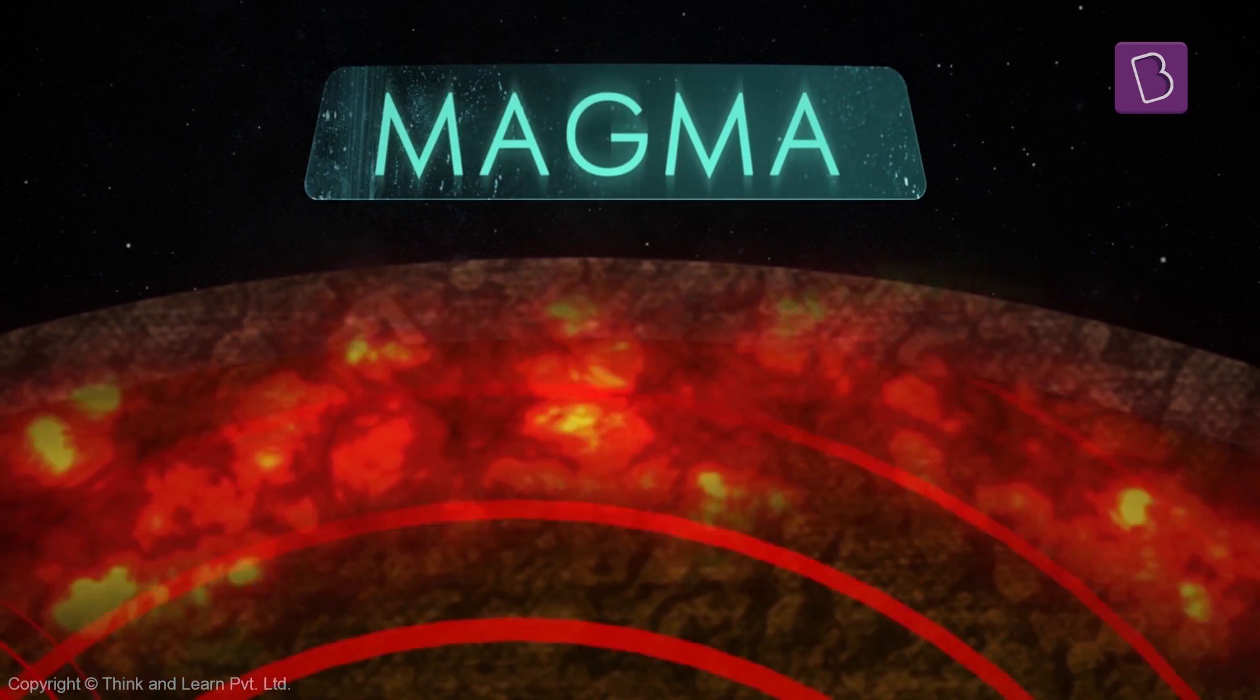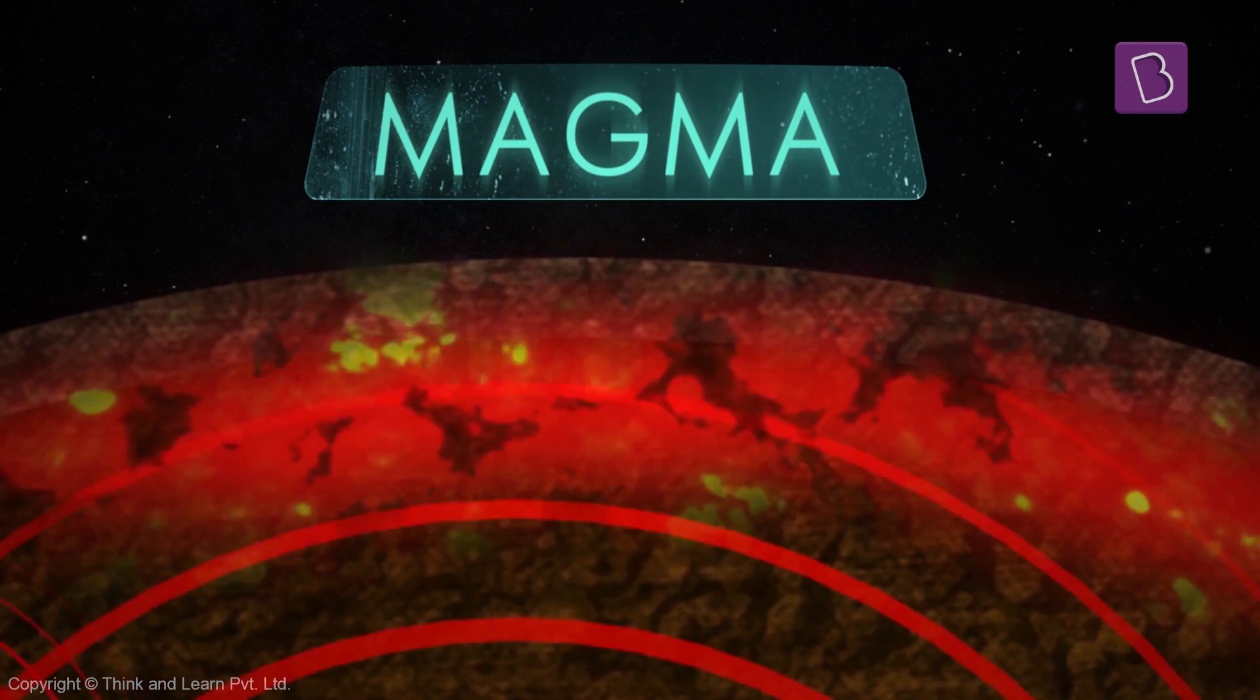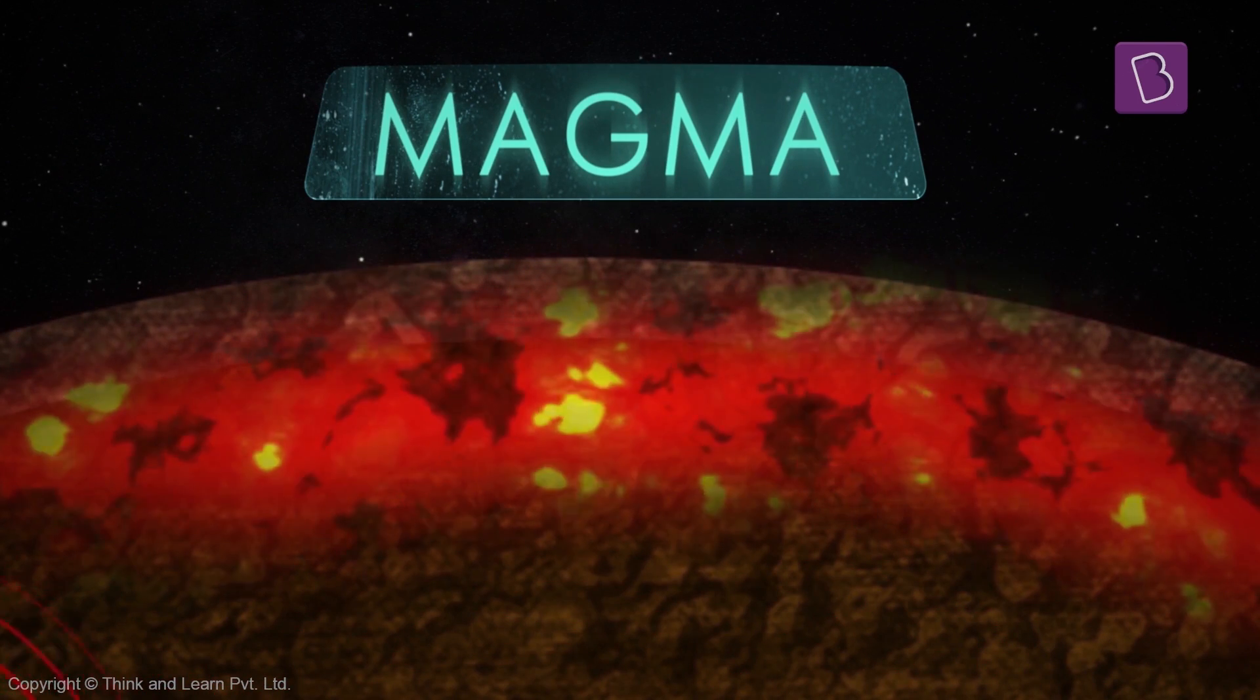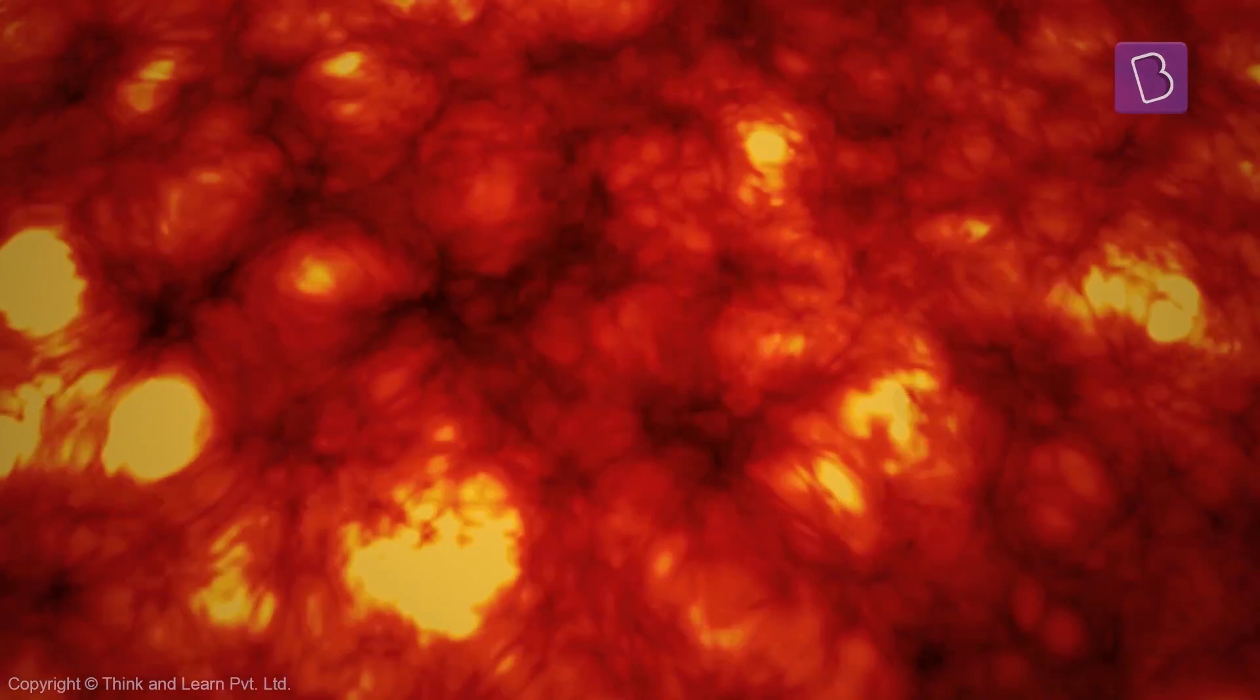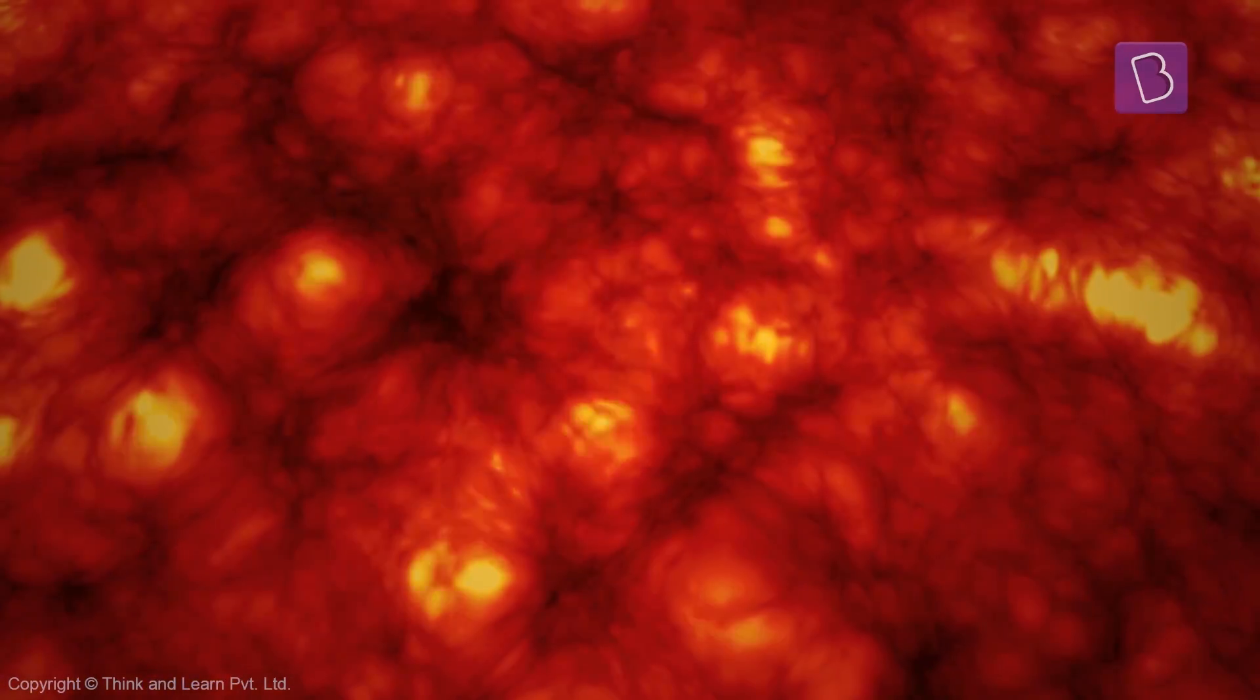The magma is formed from rocks and minerals melting because of these super high temperatures, and eventually the lava creeps out from these very ruptures.